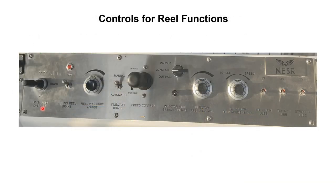The first control for the reel is level wind and override. If we want to move the level wind in the down or upward position, we will use this knob towards the down and up position respectively. If we want to move the override in the left or right direction, we will use this same knob for left and right movement.